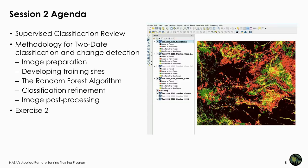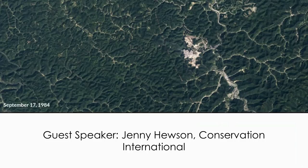Today's agenda includes an overview of supervised classification and then describing methodology for two-date classification and change detection. That includes image preparation, developing training sites, a discussion on random forest, classification refinement, and image post-processing. Following that lecture by Jenny, Amber McCollum will lead you through exercise two. I'm now going to turn it over to Jenny Hewson from Conservation International.